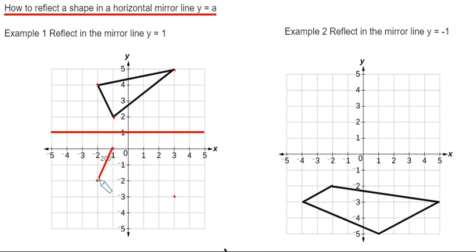So once this is done, just join your points up with your ruler. Let's move on to example 2 then.